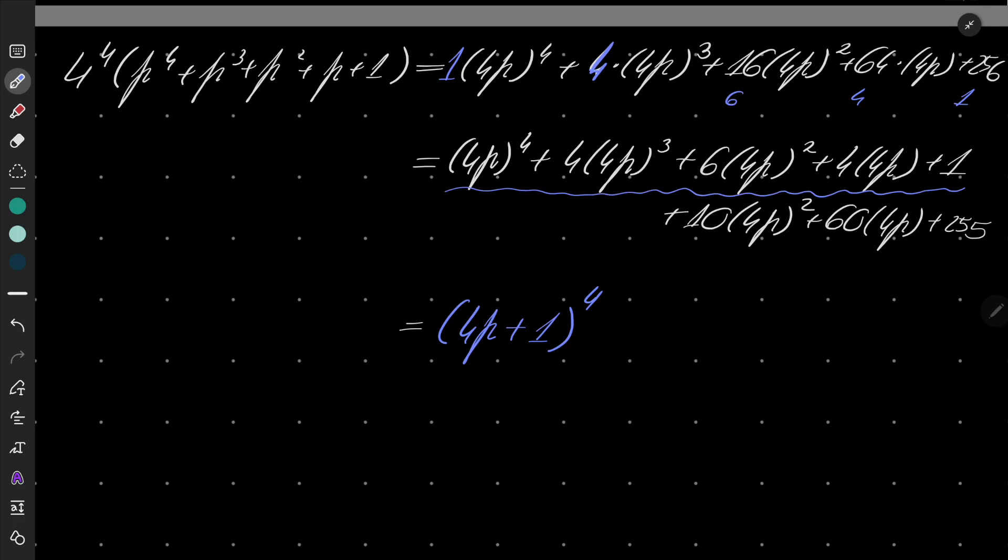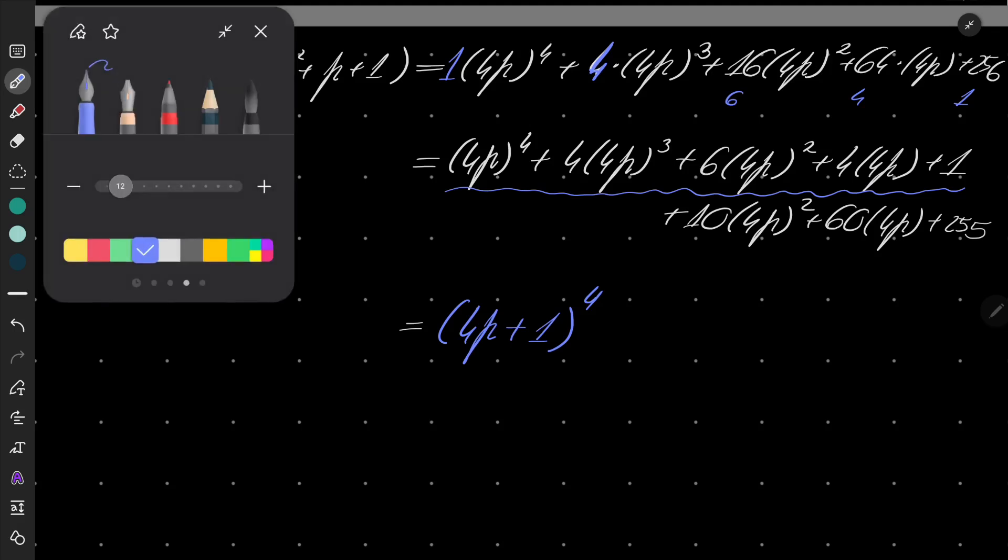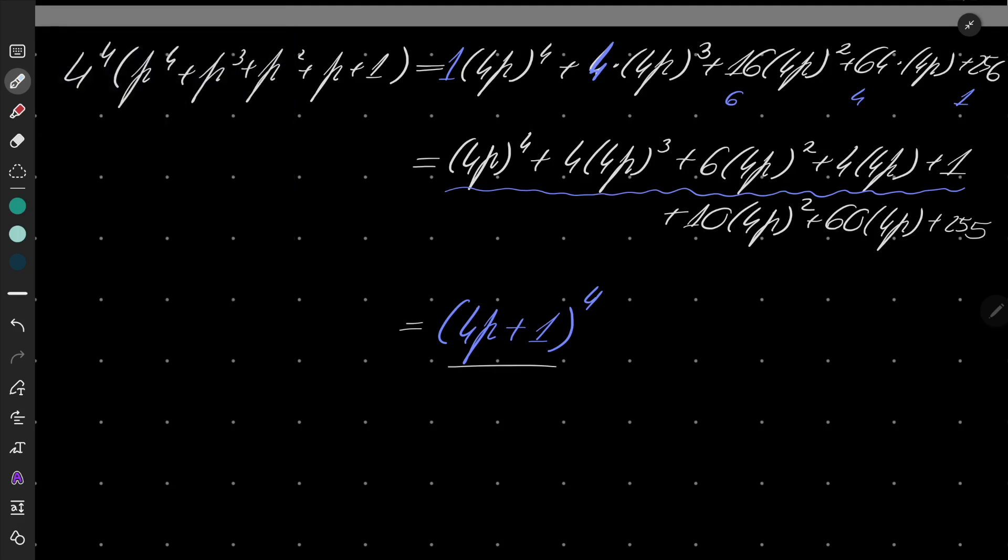And that suggests that it might be beneficial to express the rest of our polynomial in terms of 4p plus 1. How can we do it?